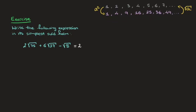It doesn't take us too long to see that 25 is the largest square factor of 75. And since 75 equals 25 times 3, we can write that this equals 2 times the square root of 25 times 3.